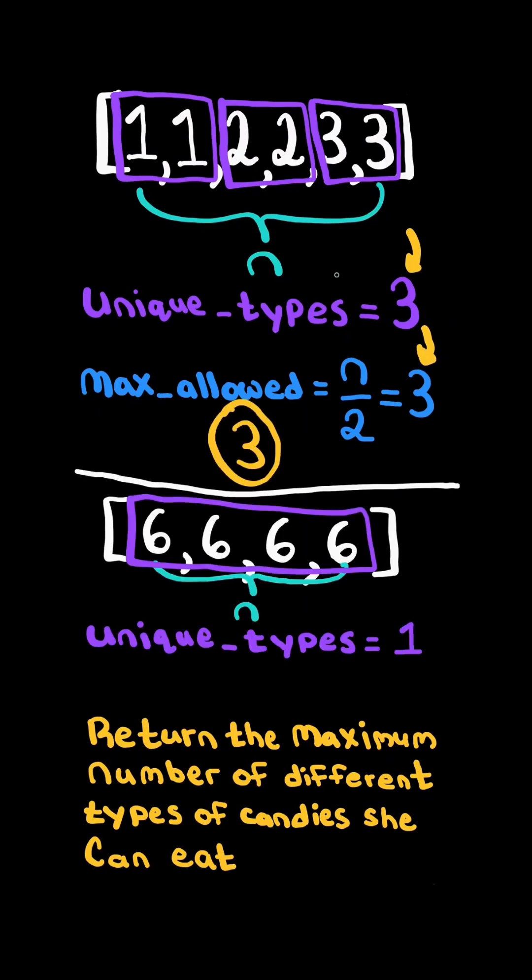The number of different types of candies is one, and the maximum amount of candies she is allowed to eat is two. And so we return the amount of unique candies she can eat, which is one.